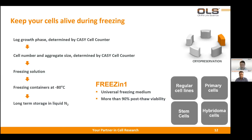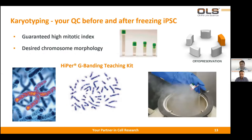We have special freezing media optimized for different cell types — for example, regular cell lines, primary cells, stem cells, and hybridoma cells. Other factors can also influence quality control of the cell culture. For some cell types, it's important to know that the cells have a normal karyotype — especially important when working with induced pluripotent stem cells. For in vitro assays, if you have a changed karyotype, the phenotype can be slightly changed and the cells may have different properties, which you want to prevent.